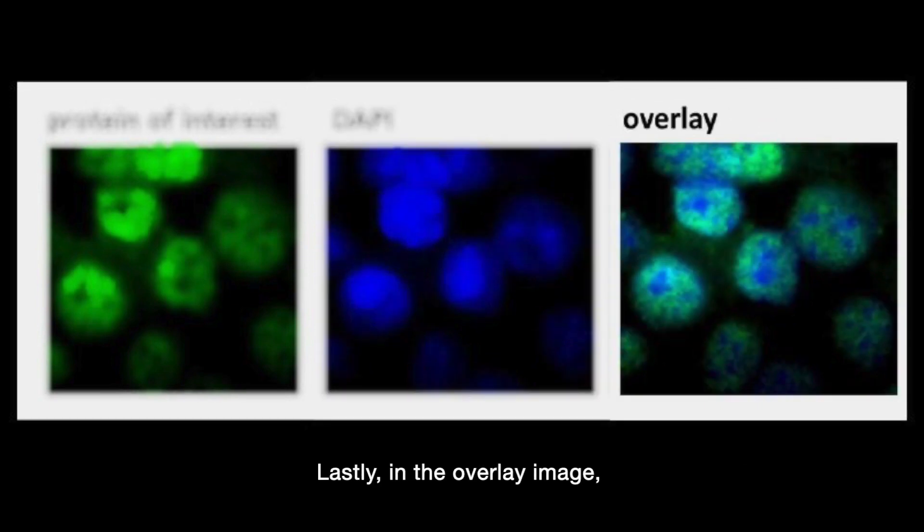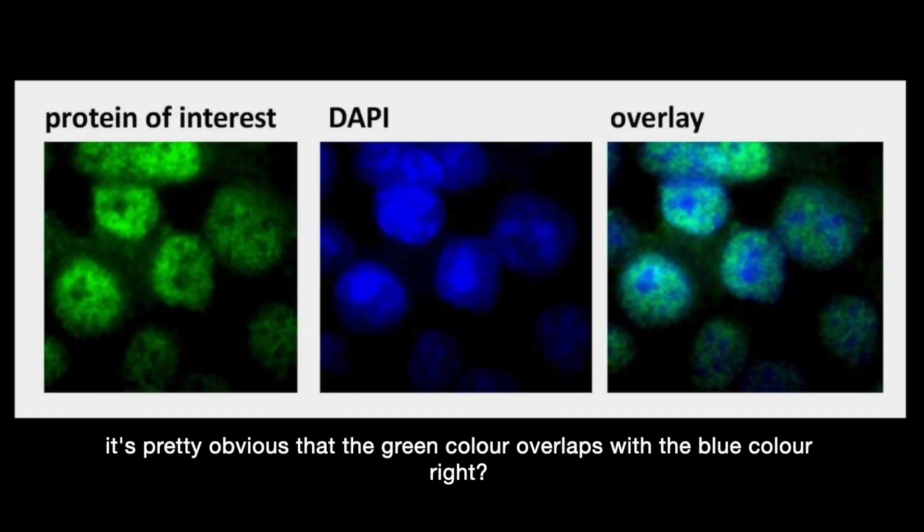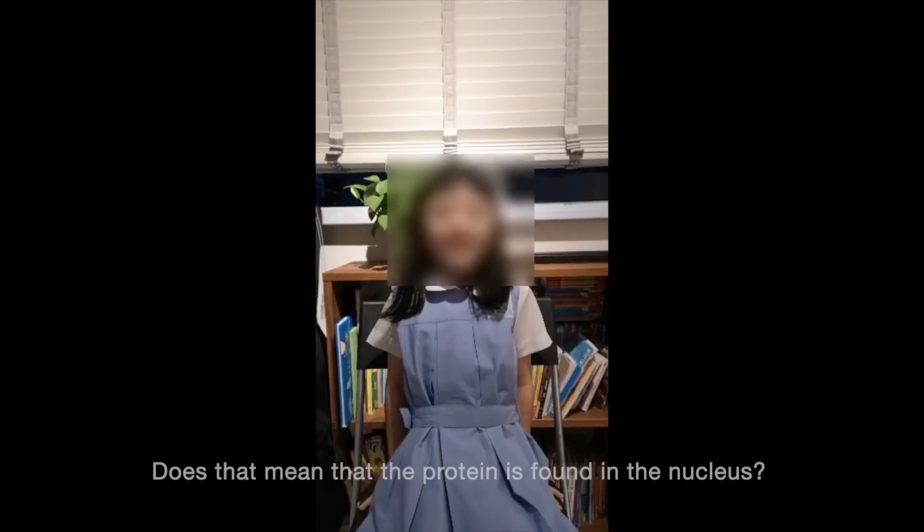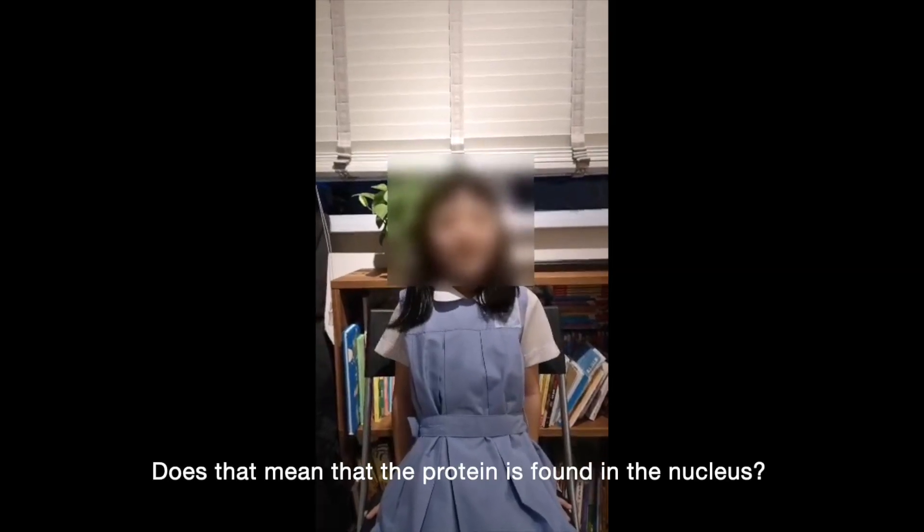Lastly, in the overlay image. It's pretty obvious that the green color overlaps with the blue color, right? Do you know what that means? Does that mean that the protein is found in the nucleus? That's right! With this concept of colocalization, you can find out if your protein of interest is in the nucleus or any specific organelle.